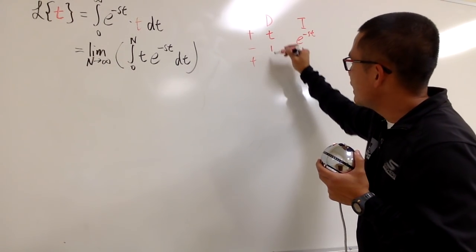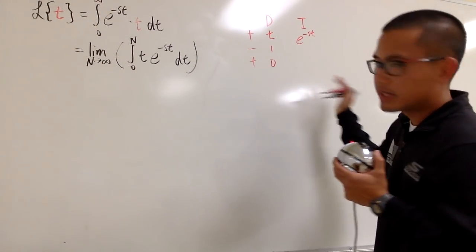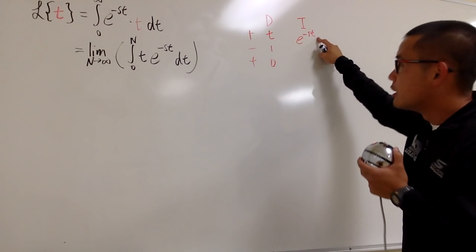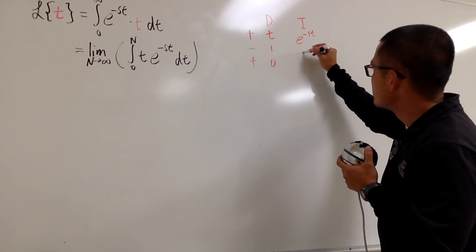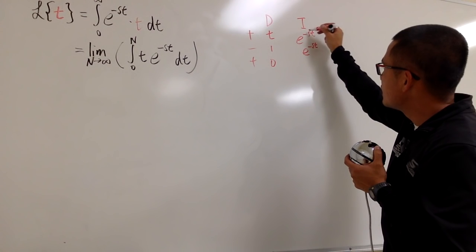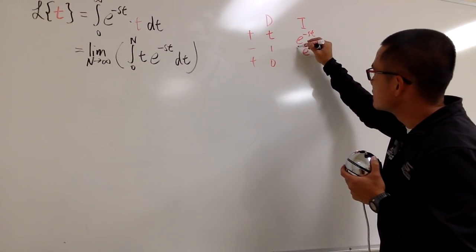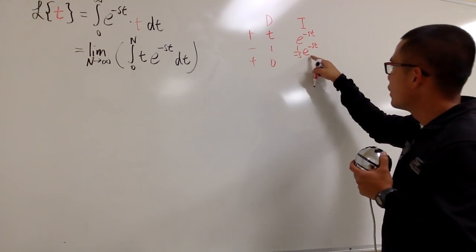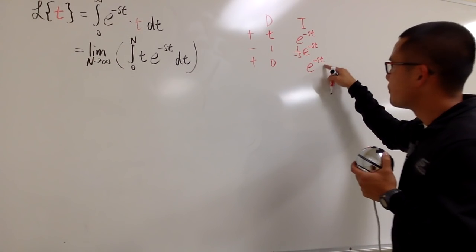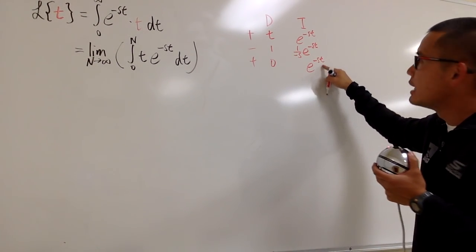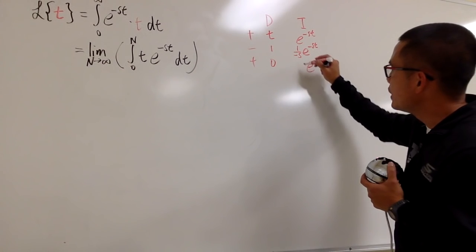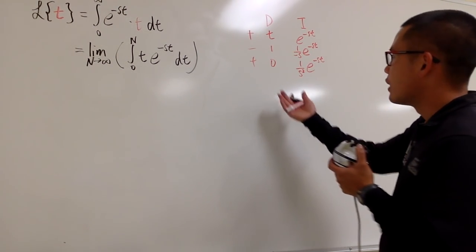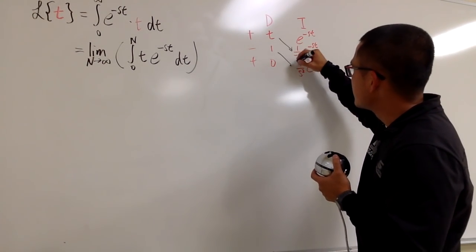To differentiate t, we get 1, and then we differentiate again and get 0, so we can stop. Now I'm going to integrate e to the negative st with respect to t. The first integration gives us e to the negative st divided by negative s. Doing it again gives e to the negative st over negative s again, so altogether we end up with 1 over positive s squared.